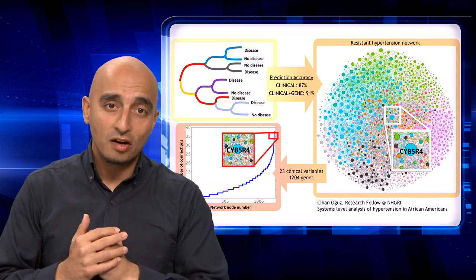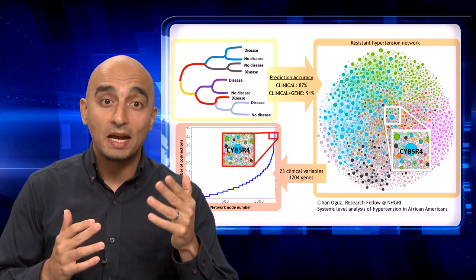Within this network, a gene named CYP5R4 turned out to be the gene with the maximum number of connections.